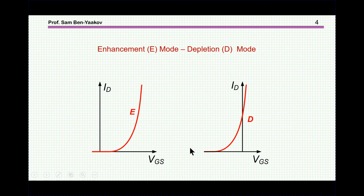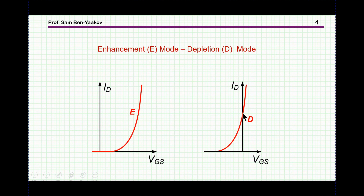For the MOSFET, when we turn it on it will conduct both ways through the channel with an RDS-on. We need to turn it on to reduce the voltage drop, but during the dead time we need a path for reverse current. There are two types of MOSFETs: enhancement mode (E-mode), where the transistor is off with VGS equal to zero and conduction starts above threshold; and depletion mode (D-mode), where the device conducts at VGS equals zero and requires a negative voltage to turn off.